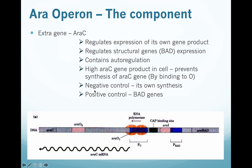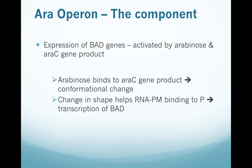AraC is the regulatory protein that can exert both negative and positive control. For negative control, araC will basically regulate synthesis of its own product — the araC gene. For positive control, it helps with transcription of BAD genes. Expression of BAD genes is activated by arabinose: arabinose binds to the araC gene product, causes a conformational change in its shape, and this helps RNA polymerase bind to the promoter, enabling transcription of BAD.